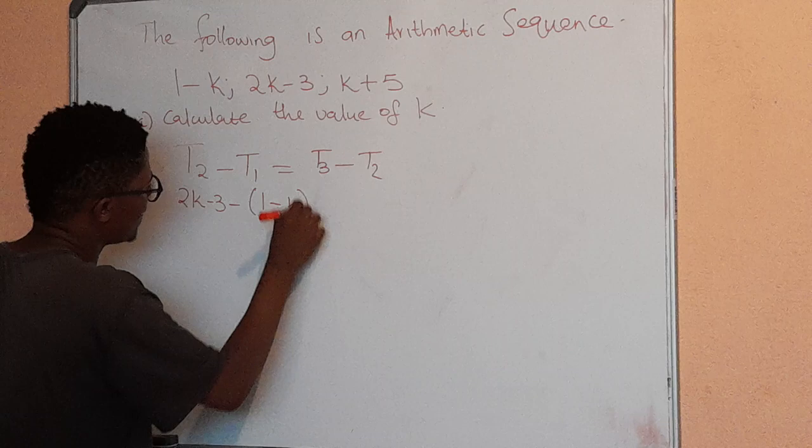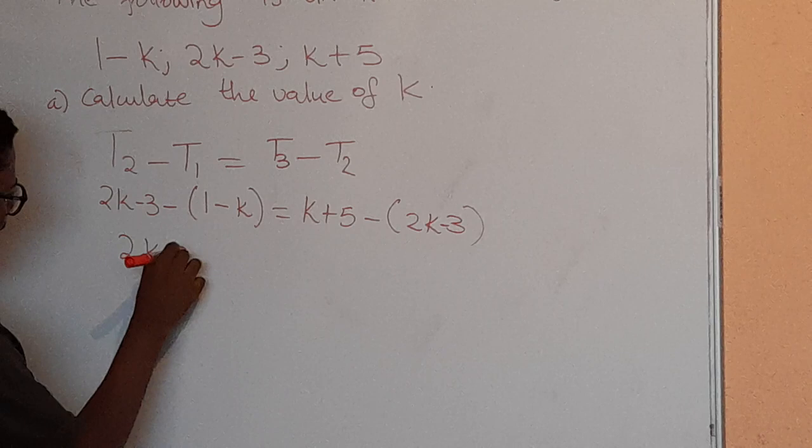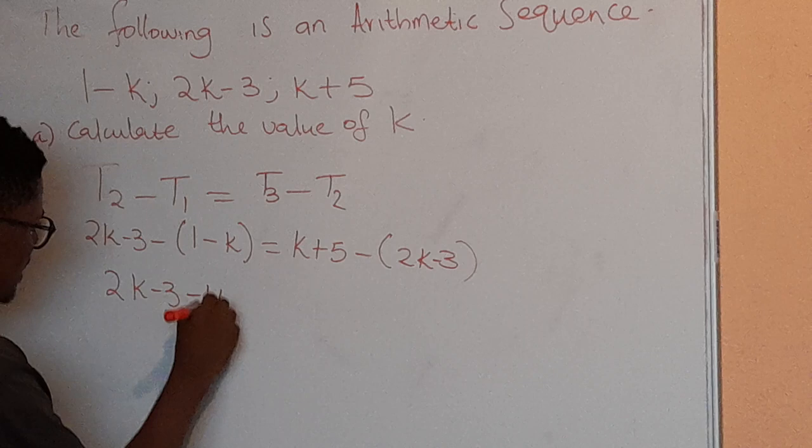and then t3 is k plus 5 minus t2, which is 2k minus 3. From there we'll have 2k minus 3, minus times 1 is minus 1, minus times negative k is positive k,